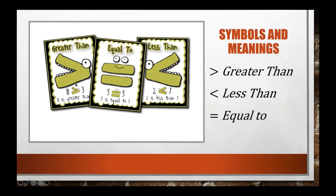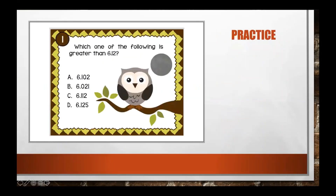Some of you may remember seeing symbols like these before. This one indicates greater than — the picture shows eight is greater than three. This one is our equal to symbol, showing five is equal to five, meaning they are equivalent numbers. And this one is our less than symbol, showing that two is less than seven.